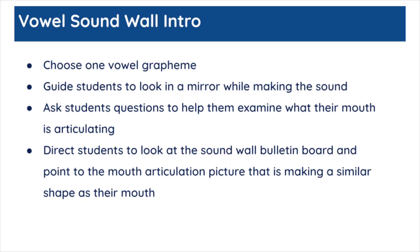To introduce the vowel sound wall, choose one vowel grapheme. Guide students to look in a mirror while making the sound. Ask students questions to help them examine what their mouth is articulating. Direct students to look at the sound wall bulletin board and point to the mouth articulation picture that's making a similar shape as their own mouth.